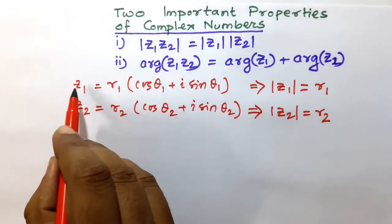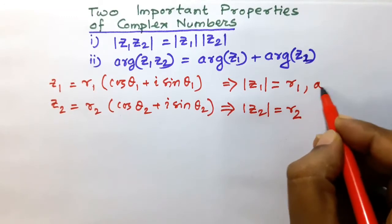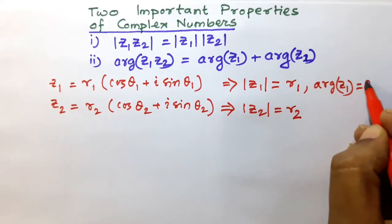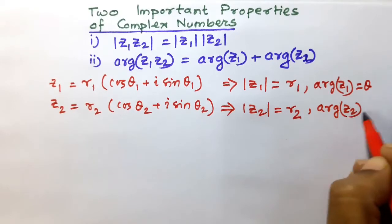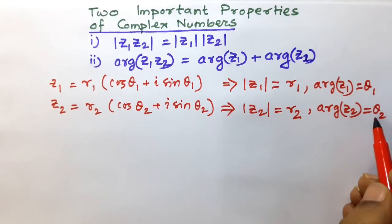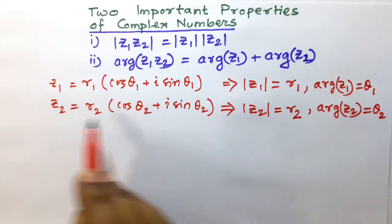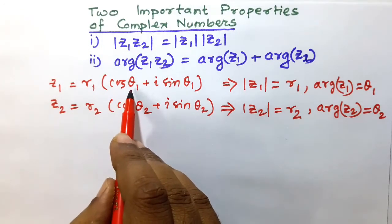What is the argument of Z1? Arg of Z1 is equal to θ1, the rotation. And argument of Z2 is equal to θ2. Z1 contains angle θ1 and Z2 contains the angle θ2. So the argument of Z2 is θ2 and argument of Z1 is θ1.